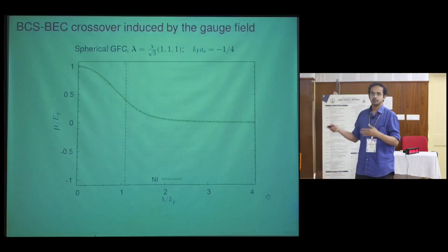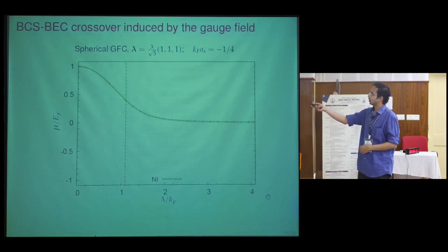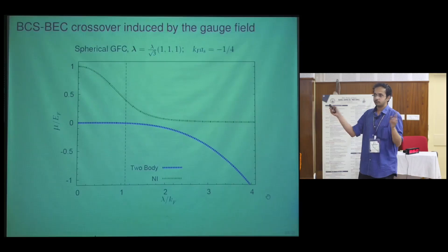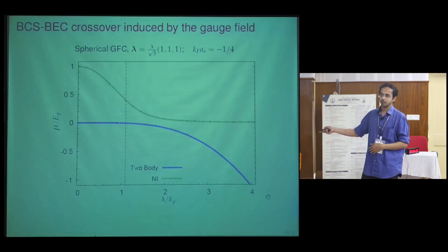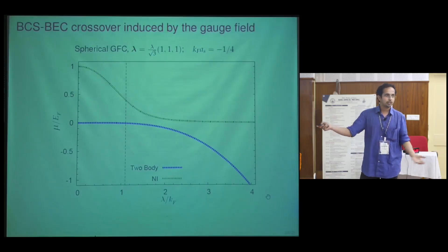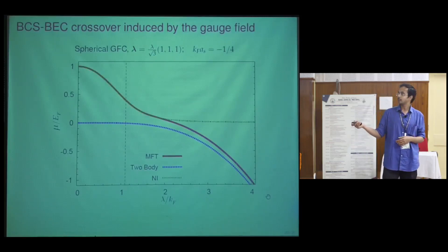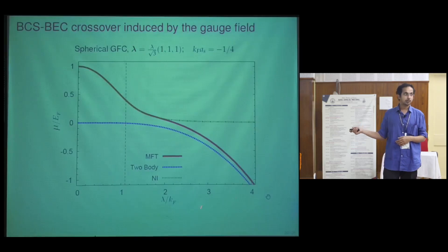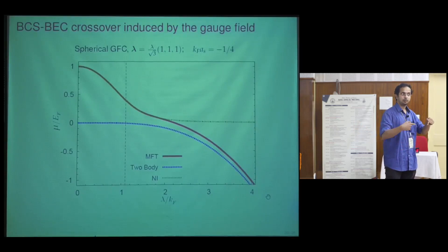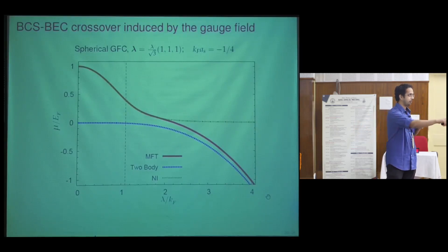Now I will tell you what happens with the gauge field. At a fixed weak interaction, as you tune lambda, the chemical potential starts from a BCS-like value and nicely evolves to a BEC value. This BCS-BEC crossover is not achieved by tuning the attraction — it is achieved by tuning the gauge field. This is a new kind of gauge-field-induced BEC crossover.